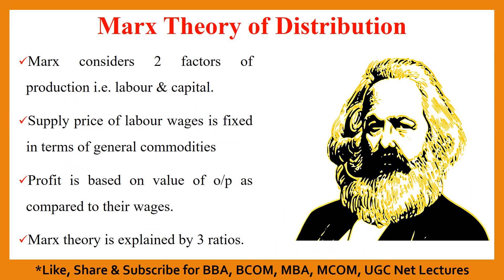Marx considers only two factors of production: labor and capital. The capitalist hires the laborers to carry out the production. The supply price of labor, or what we call wages, is fixed in terms of general commodities.